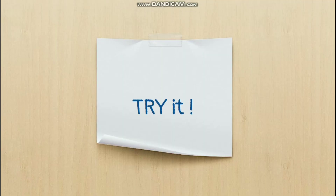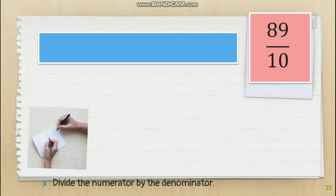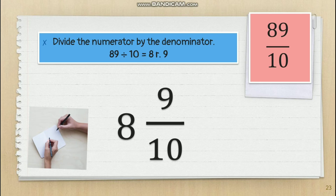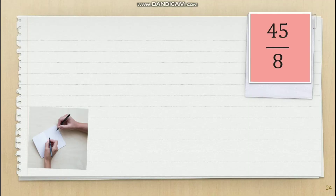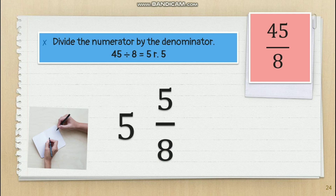Let's try more examples. We have 89/10: divide 89 by 10, which equals 8 remainder 9. Make 8 the whole number, 9 the numerator, and copy the denominator 10 — so we get 8 and 9/10. Next, 45/8: 45 divided by 8 equals 5 remainder 5. So we get 5 as the whole number, 5 as the numerator, then copy denominator 8 — giving us 5 and 5/8.